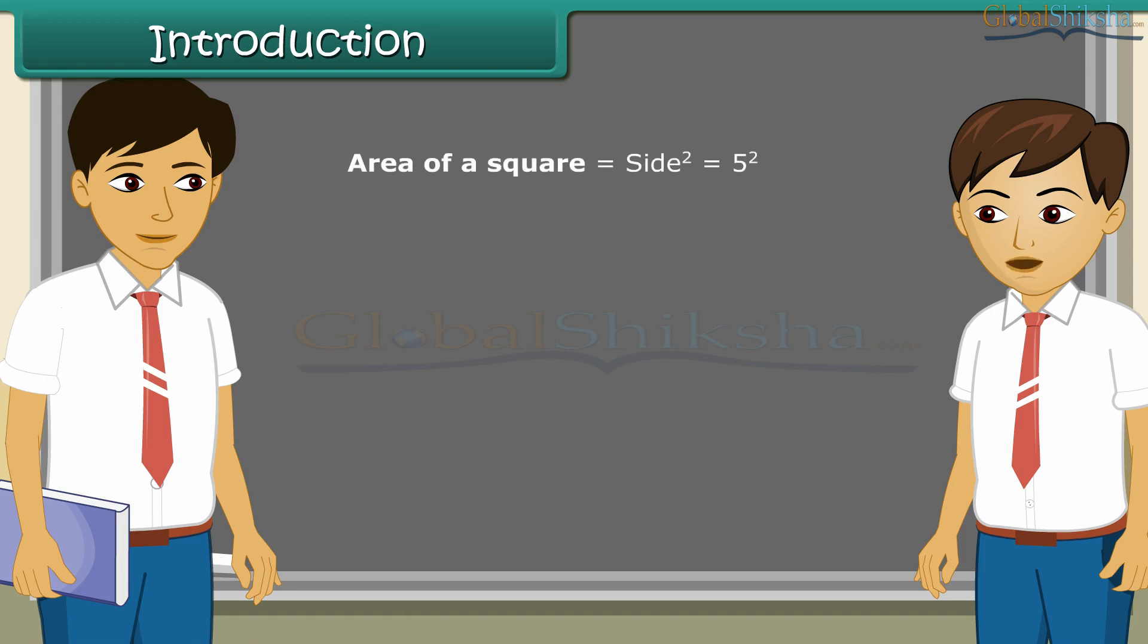What do 2 in the superscript of any number signify? Sam, it signifies the multiplication of any number with itself twice. So we call it a square of a number. Hmm. Now I understand. I tell you something. There also exists a square root which is just the inverse of a square.